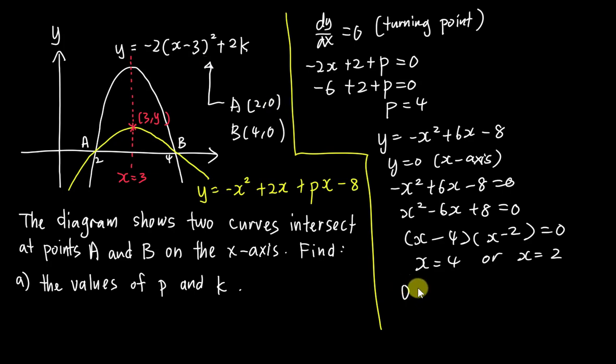So my y is 0, negative 2 and x will be 2. So it will be 2 minus 3 square plus 2k.